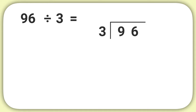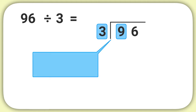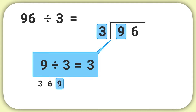From there, we'll start by focusing on this 9, where we can divide 9 by 3. In your head, think: what does 9 divided by 3 equal? Well, 9 divided by 3 equals 3. If you ever aren't sure, just skip count: 3, 6, 9 — 9 is the third skip count, so 9 divided by 3 must equal 3.